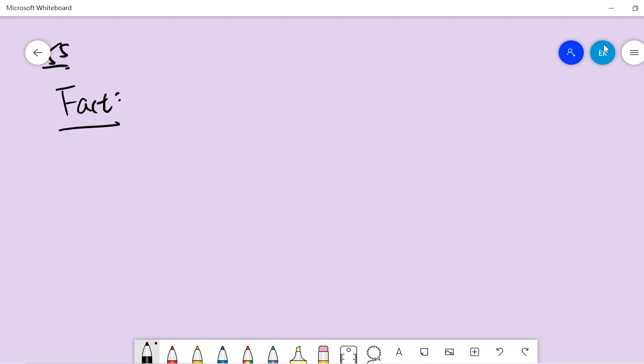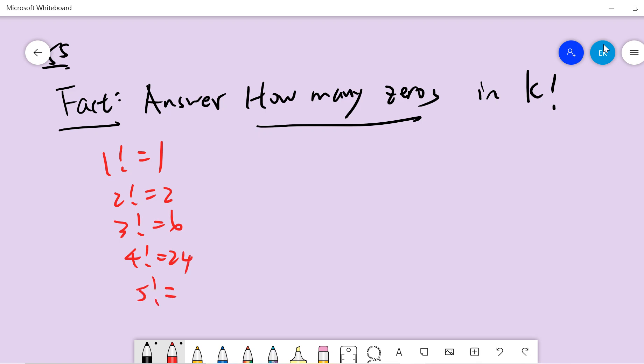We need to answer how many zeros in k factorial. For example, 1 factorial is 1, 2 factorial is 2, 3 factorial is 6, 4 factorial is 24, 5 factorial is 120, so there is one zero here.